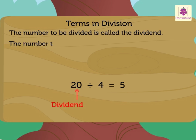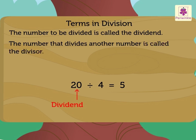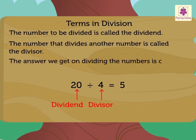The number that divides another number is called the divisor. The divisor here is number 4. Finally, the answer we get on dividing the numbers is called the quotient, which is number 5 here.